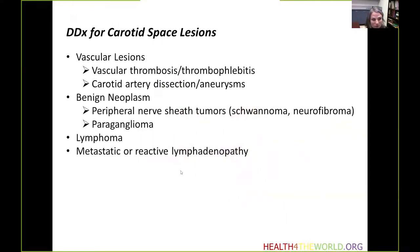The differential diagnosis for carotid space lesions includes multiple vascular lesions, including vascular thrombosis, thrombophlebitis, carotid artery dissection, and aneurysms. Neoplasms may also be seen, especially peripheral nerve sheath tumors such as schwannoma and neurofibromas, as well as paraganglioma from glomus tumors. Lymphoma may be seen here as well, along with reactive or metastatic adenopathy.